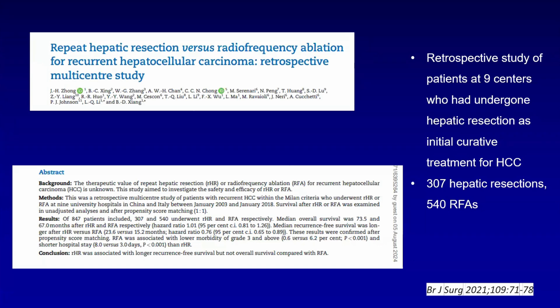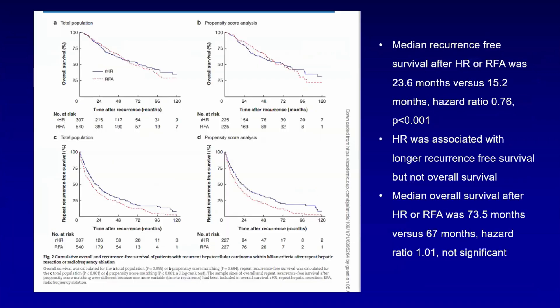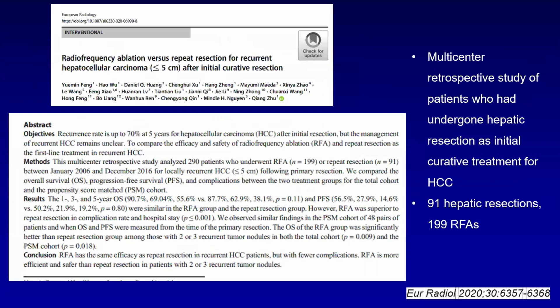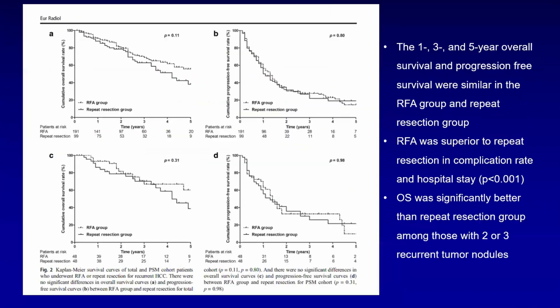A retrospective study of patients at nine centers who had undergone hepatic resection as the initial curative treatment for HCC included 307 resections and 540 RFAs. Hepatic resection was associated with longer recurrence-free survival but not overall survival; median overall survival was similar and not significantly different between hepatic resection and RFA. Another multicenter retrospective study found that one-, three-, and five-year overall survival and progression-free survival were similar in the RFA and repeat resection groups. RFA was superior in terms of lesser complication rates and shorter hospital stay, but overall survival was better with repeat resection among patients who had two to three recurrent tumor nodules.